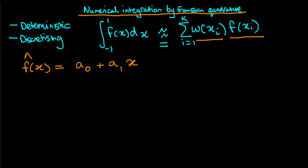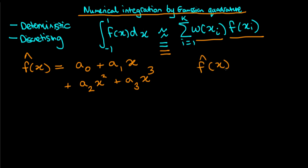We then apply those x values and weights to our actual function f, calculating the functional value at all those x values to approximate the integral. The problem with this simple approximation is that most complicated functions we're interested in integrating aren't well approximated by a linear model. So instead we might include higher order terms — a quadratic and a cubic term. We can then find new x values and new weights to ensure the approximation is exact for all polynomials up to cubic order.